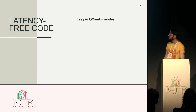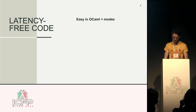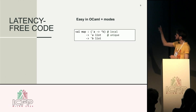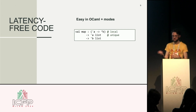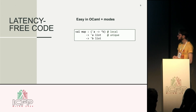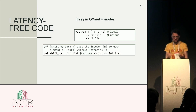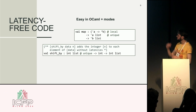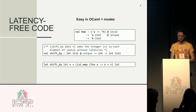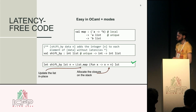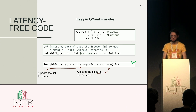Together, this now enables us to write low latency code in OCaml. If I take the map function and annotate the closure I give to it as local — meaning the closure will not escape and can be allocated on the stack — and the input list should be unique, then I can implement the shiftBy function on a unique list by calling list.map, where the closure is allocated on the stack and the list is overwritten in place. So this causes no allocations.